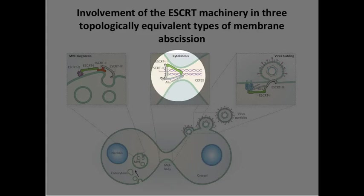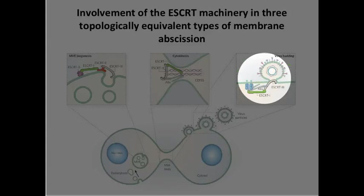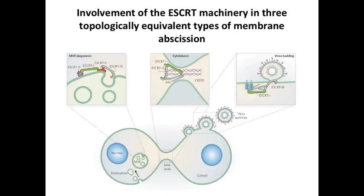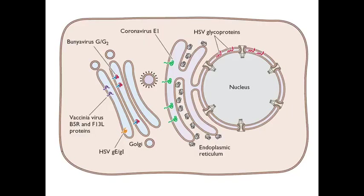The virus has usurped this escort machinery in order to bud from the cell. ESCRT proteins are also involved in cell division. So retroviruses and other enveloped viruses have grabbed this escort machinery by interacting with the Gag protein or with some structural protein of the virion, and instead of normally invaginating a vesicle into the cell, the virus has tricked it into making a bud outward. That's how the virus actually forms the bud — through this ESCRT system.